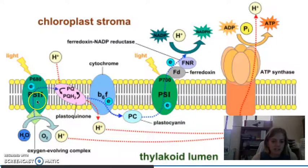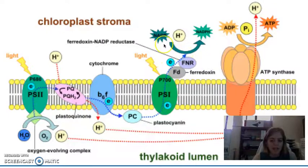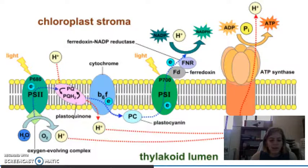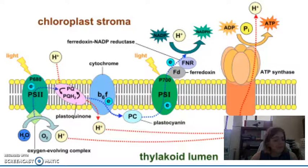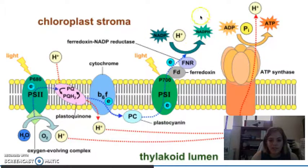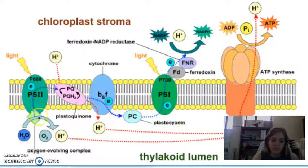The electrons continue to get passed through an electron transport chain very similar to the one you are familiar with from cellular respiration. Eventually, that electron transport chain converts NADP+ to NADPH, which is a form of high energy electron carriers very similar to the NADH from cellular respiration. This will be used in the Calvin cycle, so this is one form of energy we get from the light reaction, coming from our electrons — which come from the splitting of water, a direct result of light hitting photosystem II.